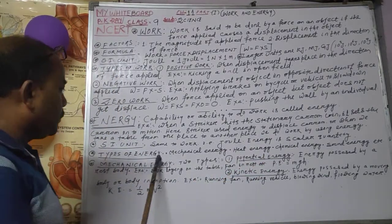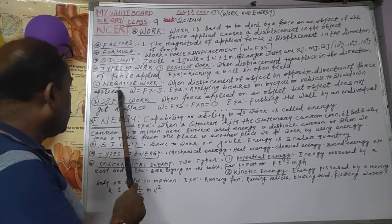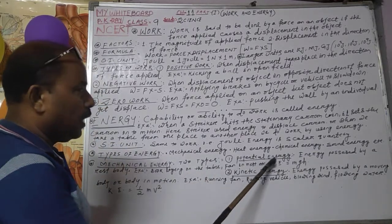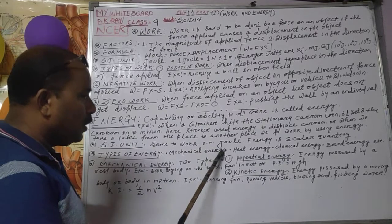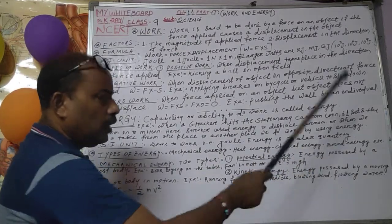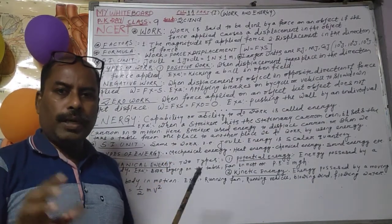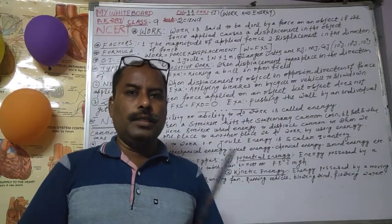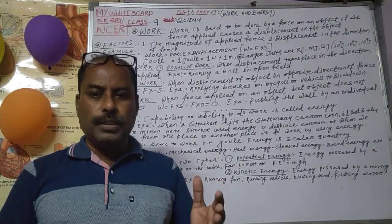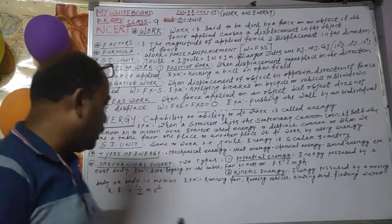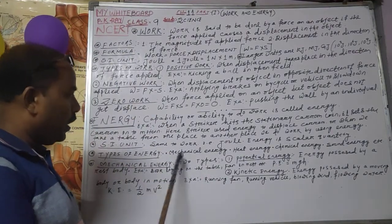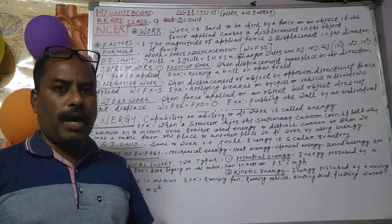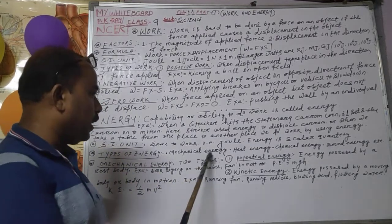Let us see the types of energy. Like work is positive, negative, zero — similarly, energy is also of different types. The types include: mechanical energy, heat energy, chemical energy, sound energy, water energy, muscular energy, magnetic energy, electrical energy, and nuclear energy. Many sources of energy are there — these are known as the types of energy. But our syllabus deals with mechanical energy. Mechanical energy is related to the body or the physical mass of the body. Mechanical energy has two types: one is potential energy and another is kinetic energy.